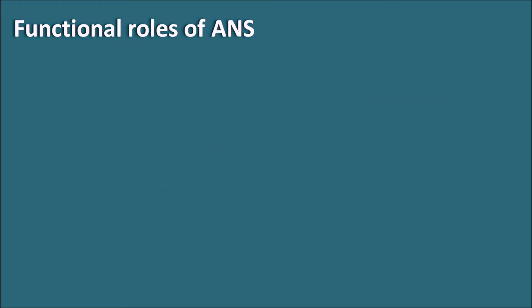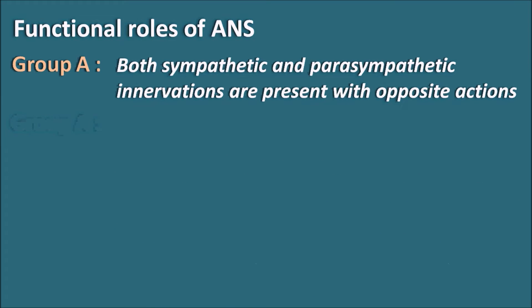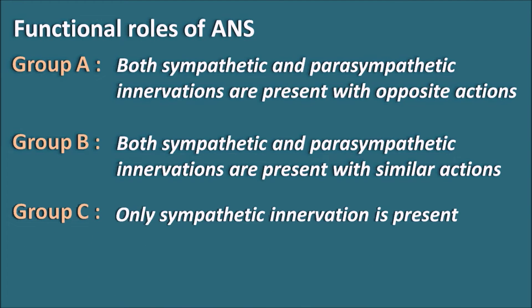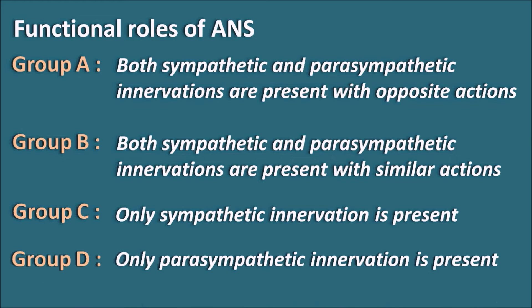Let us now go into detail about how these two divisions work and where they work oppositely as well as similarly. To understand the functional roles of the ANS, we divide them into four groups. Group A: both sympathetic and parasympathetic innervations are present with opposite actions. Group B: both are present with similar actions. Group C: only sympathetic innervation is present. Group D: only parasympathetic innervation is present. By dividing the ANS roles into these four groups, we can easily understand how both divisions maintain homeostasis.